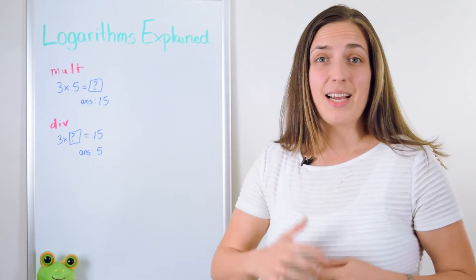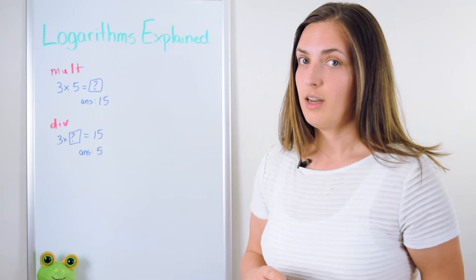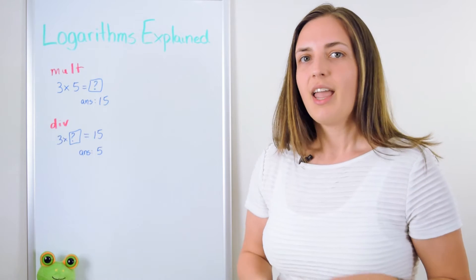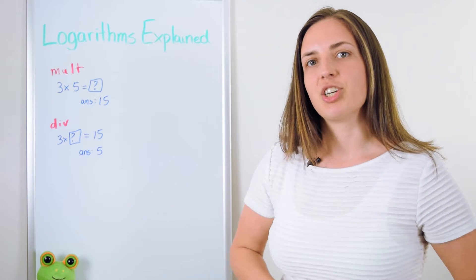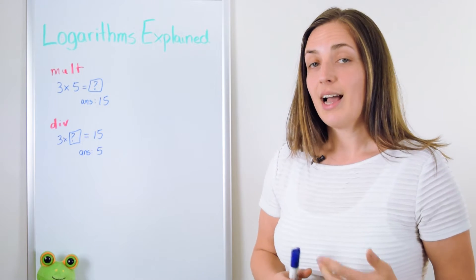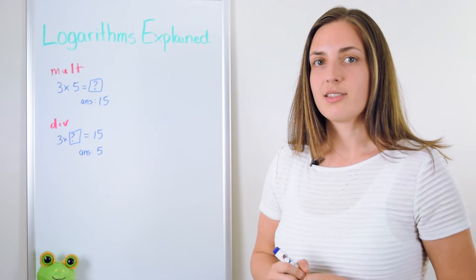But if I say 3 times what equals 15, then your answer is 5, and what you're really performing is division. So when we set up the question in that way, we have our own symbol which represents division.